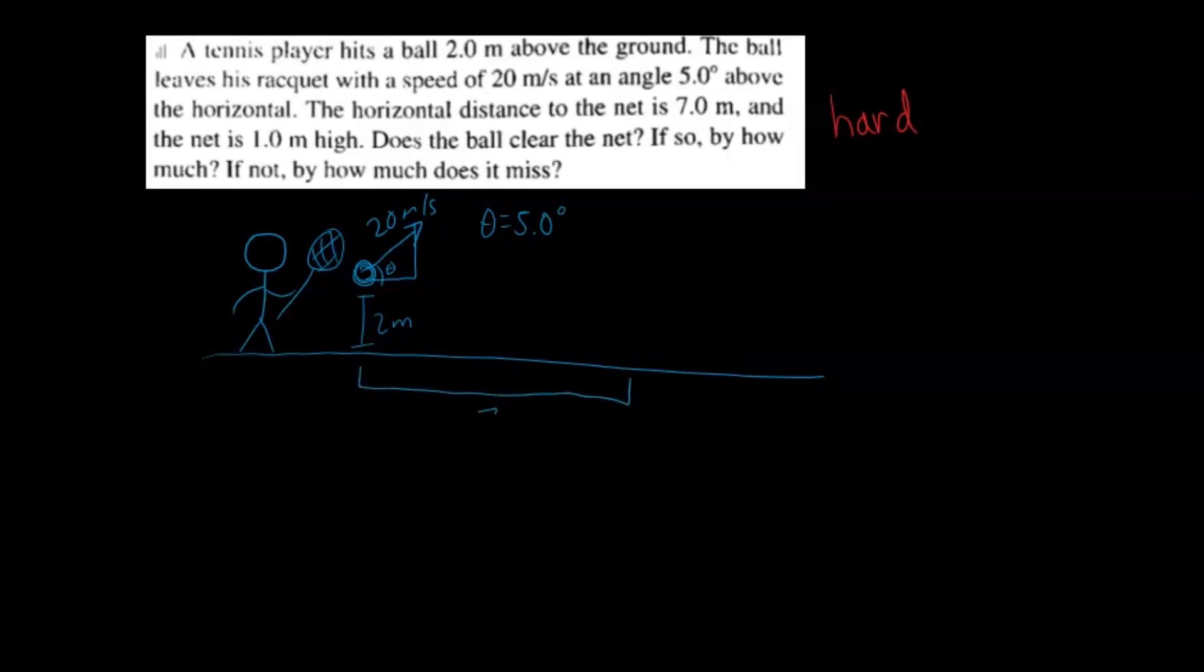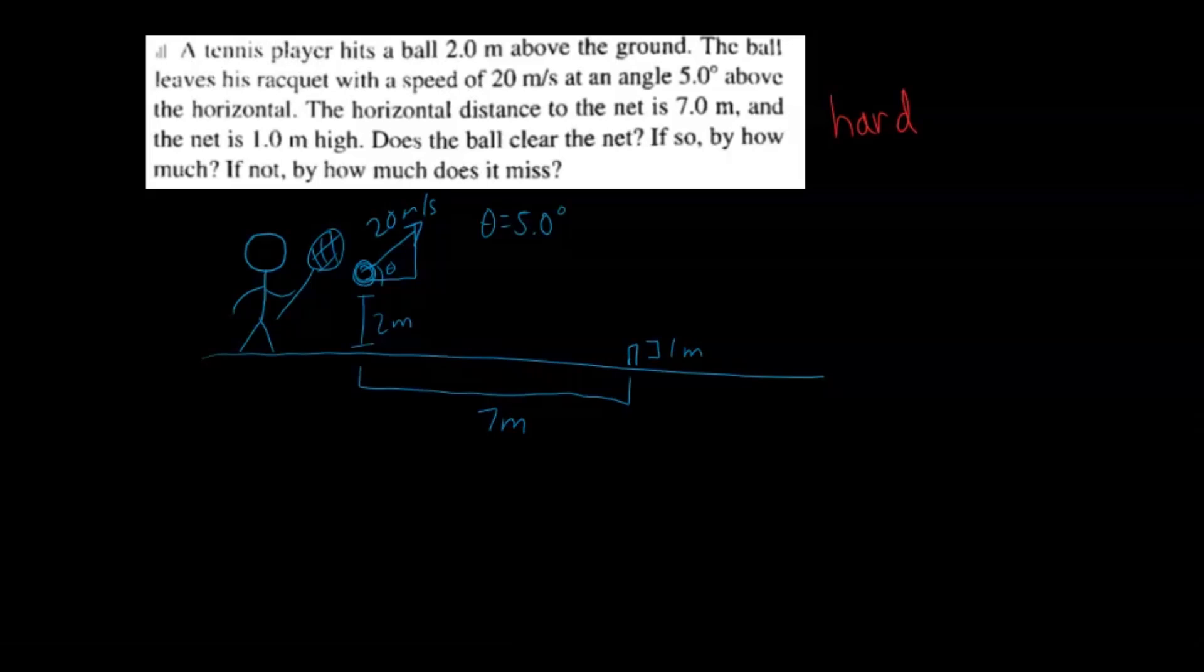So let's just draw a diagram. So we have a little guy here hitting a tennis ball with his racket. All right, so he hits this ball and this ball is 2 meters above the ground. And this is the ground and it leaves the ground, or not leaves the ground, leaves his racket. So it leaves his racket at 20 meters per second. And the angle it makes with the horizontal is 5 degrees. I'm just going to call that theta and label it here, 5 degrees. And the distance from the ball to the net horizontally, 7 meters, and the net itself is 1 meter in height.